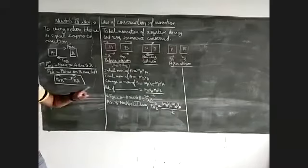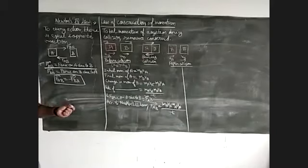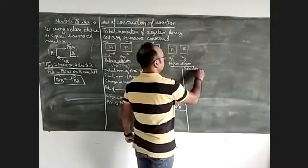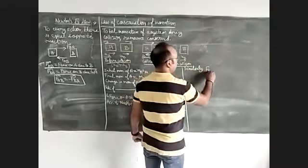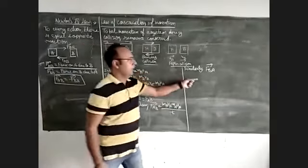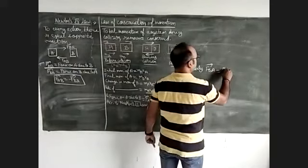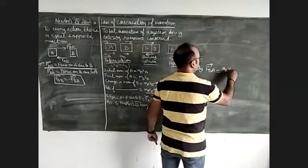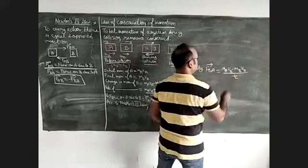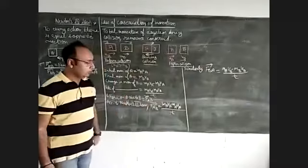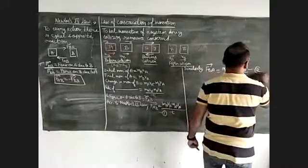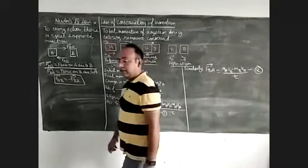Similarly, for body B, I can write: the force on B due to A is F_BA, and by Newton's Second Law, the rate of change of momentum of B gives: F_BA = (m_B × V_B − m_B × U_B) / t. This is our second equation.